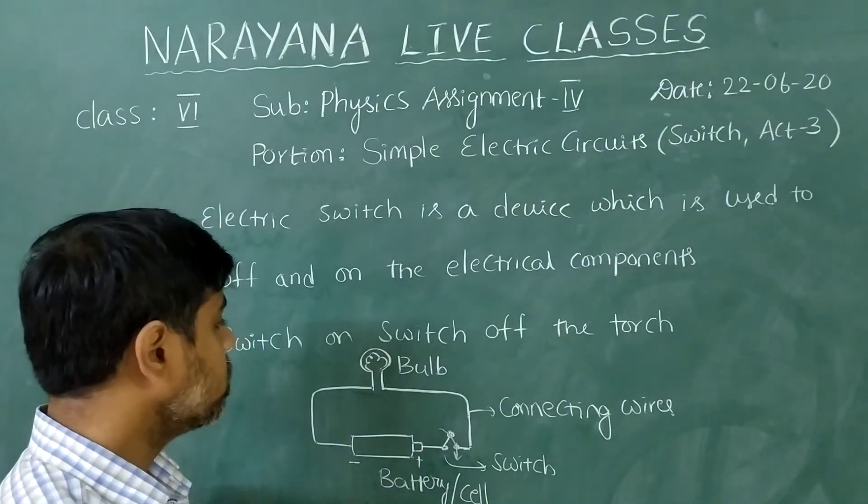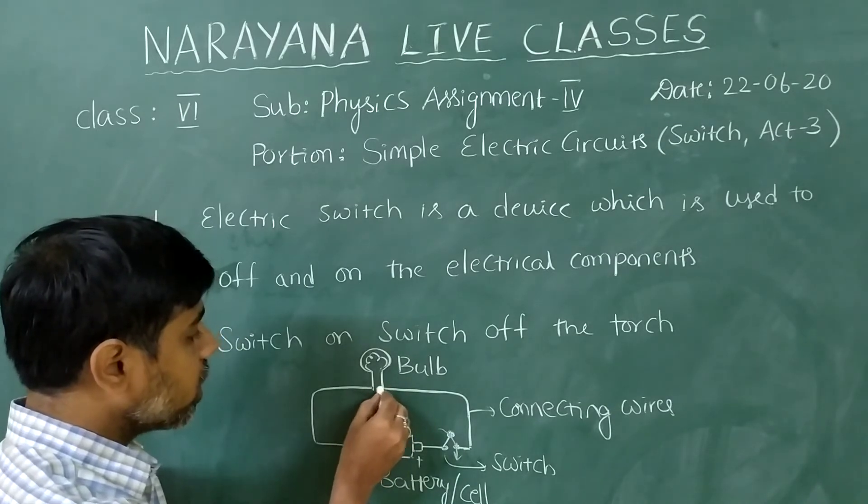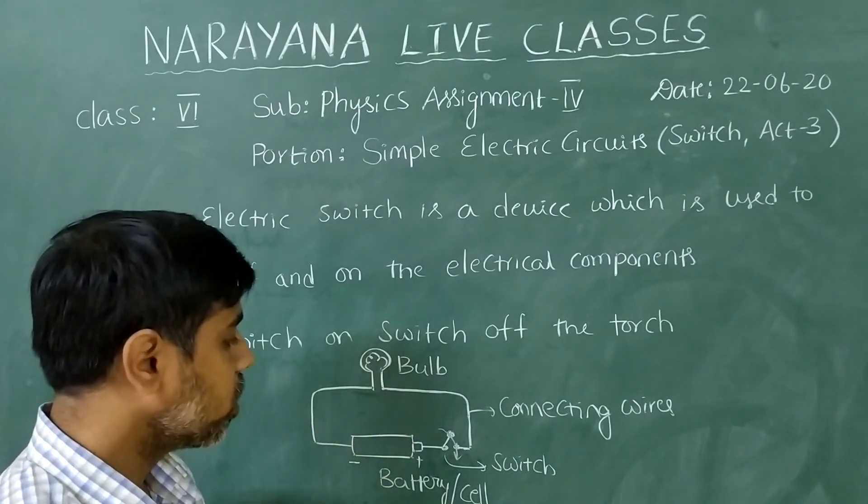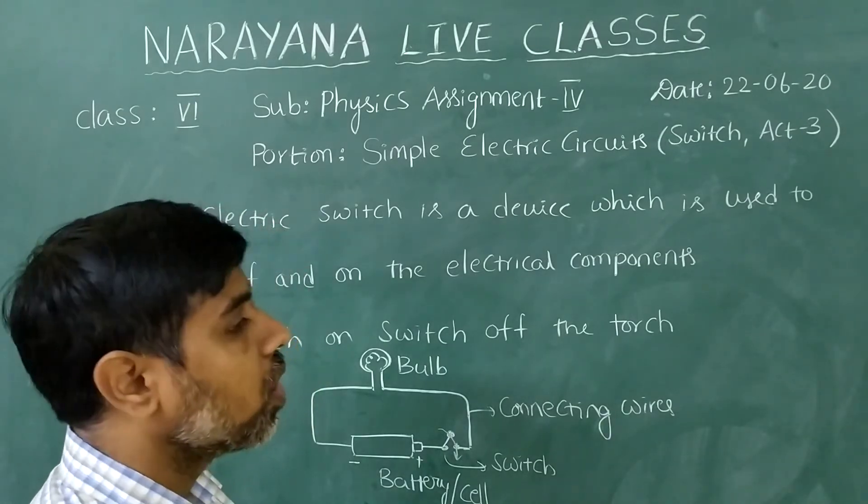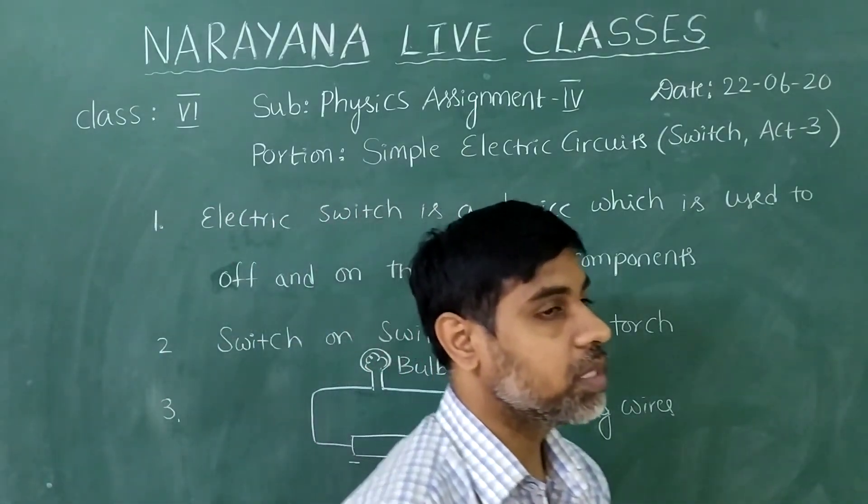And fourth situation is, both the terminals are connected to a single wire, then automatically the bulb will not glow. These are the certain situations while the bulb is not glowing.